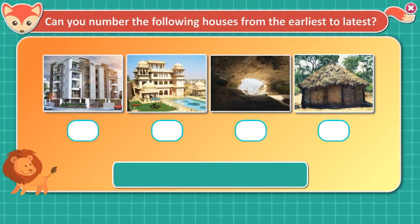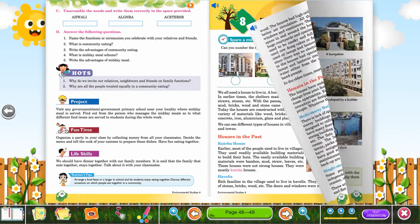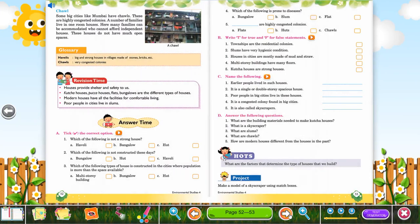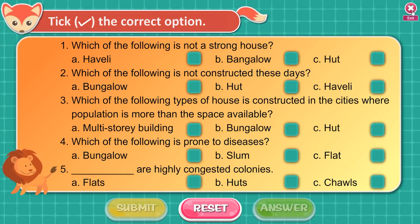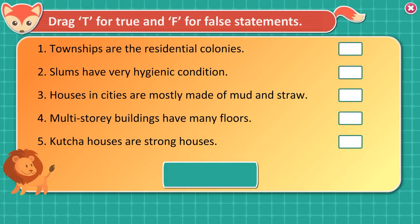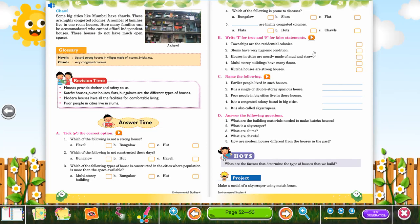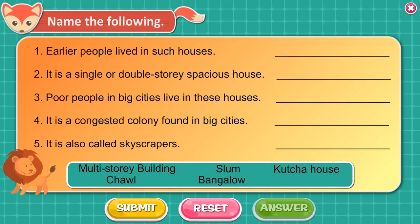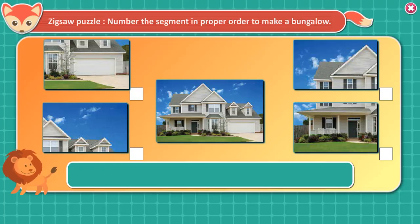Activity: Number the following houses from the earliest to latest. Tick the correct option. Drag T for true and F for false statements. Name the following. Fun Time Jigsaw Puzzle: Number the segments in proper order to make a bungalow.